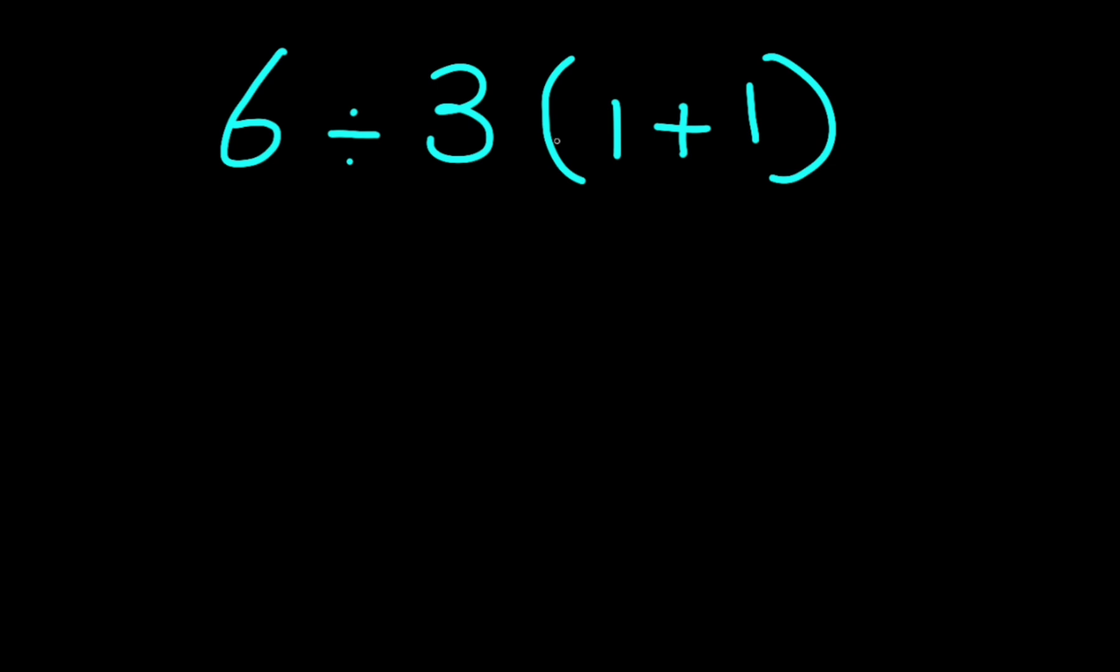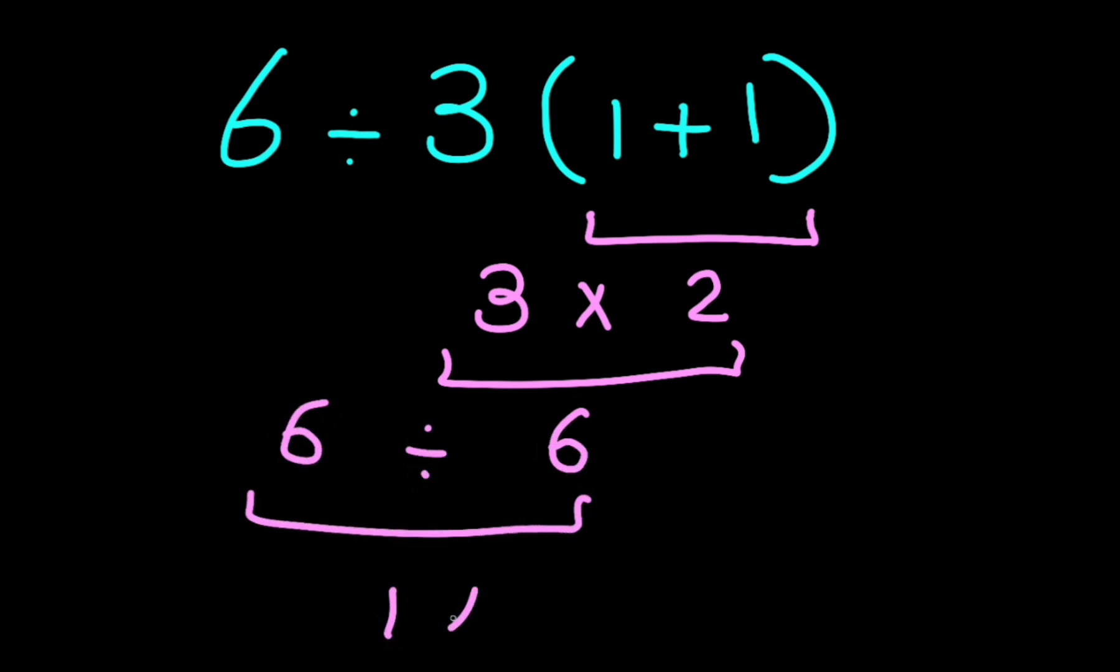We have 6 divided by 3 times 1 plus 1 in parentheses. Now 1 plus 1 gives us 2, and 3 times 2 gives us 6. Now 6 divided by 6 gives us 1, but this answer is not correct according to the rules of mathematics.